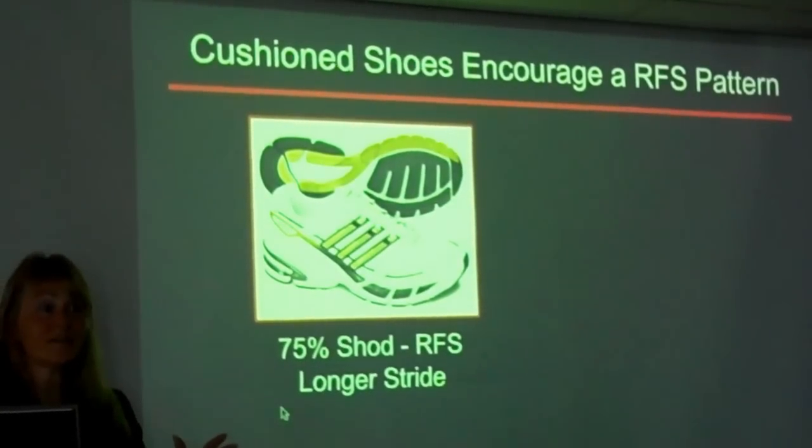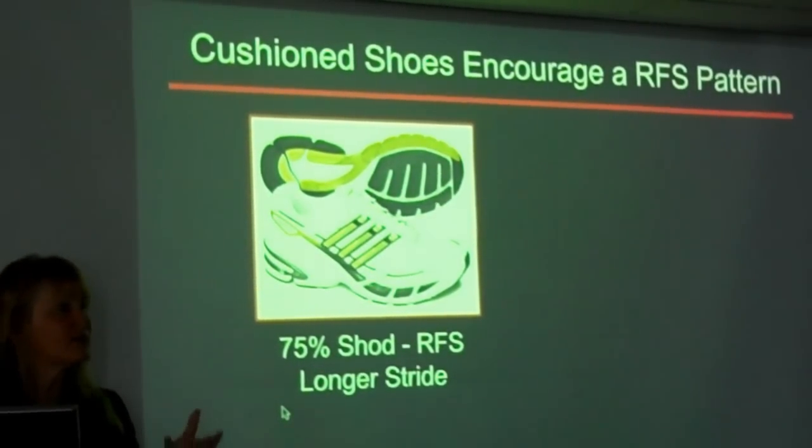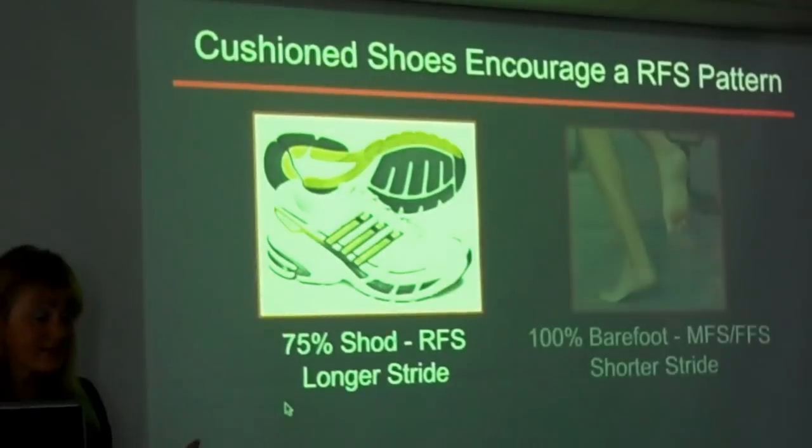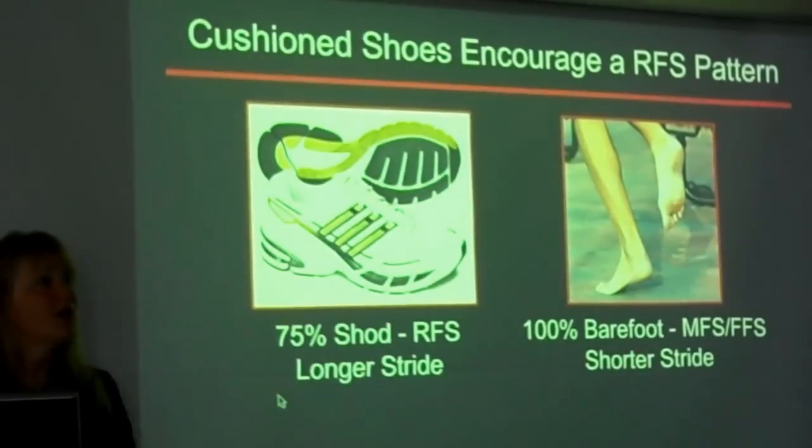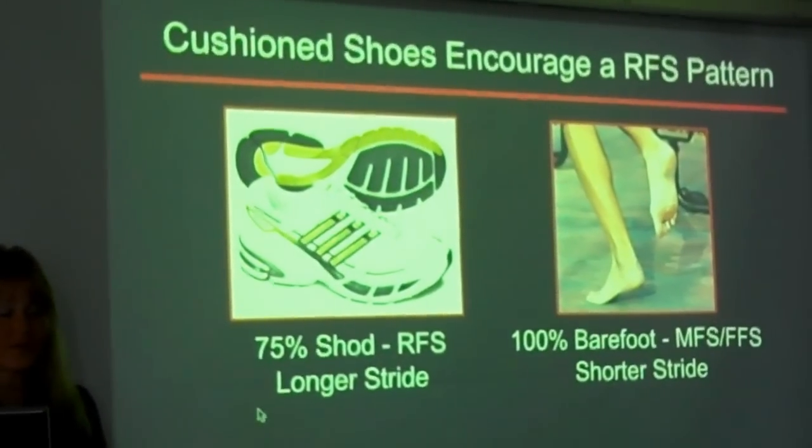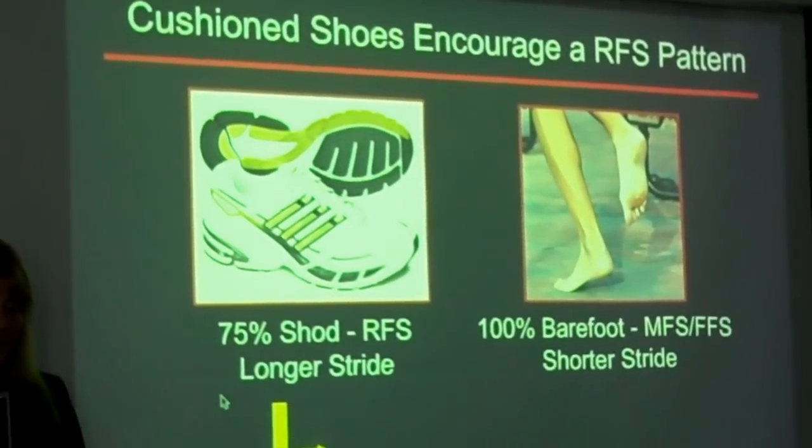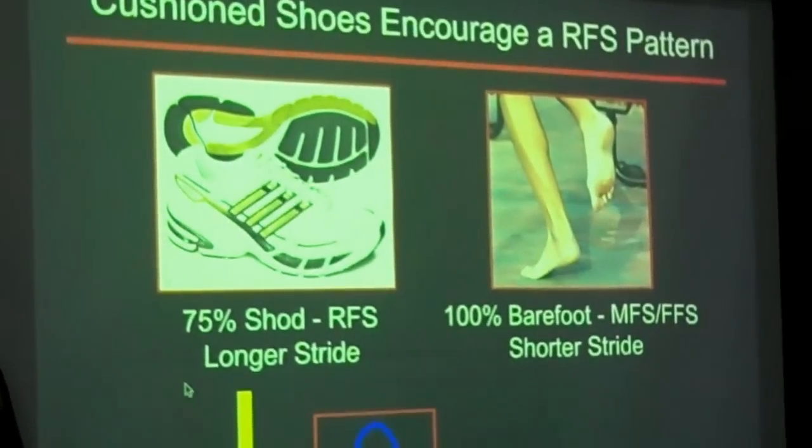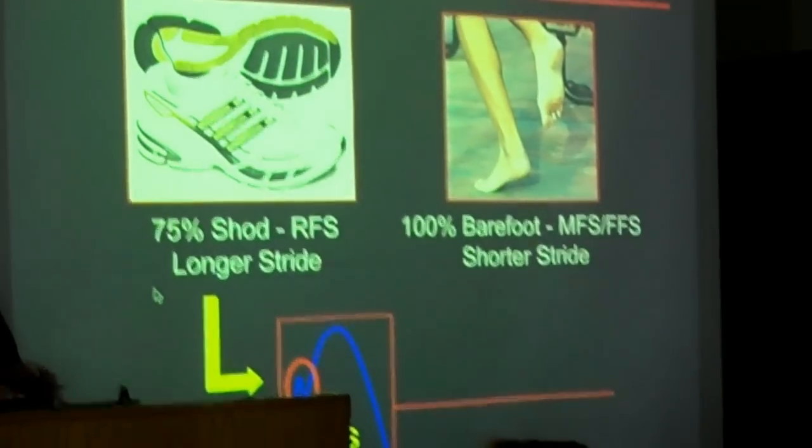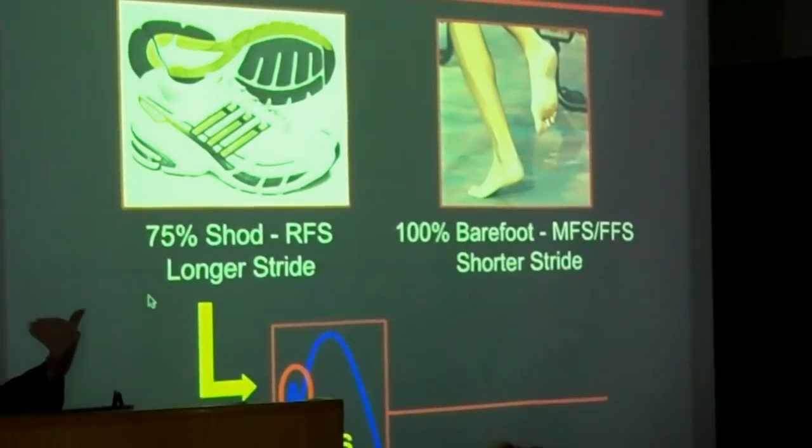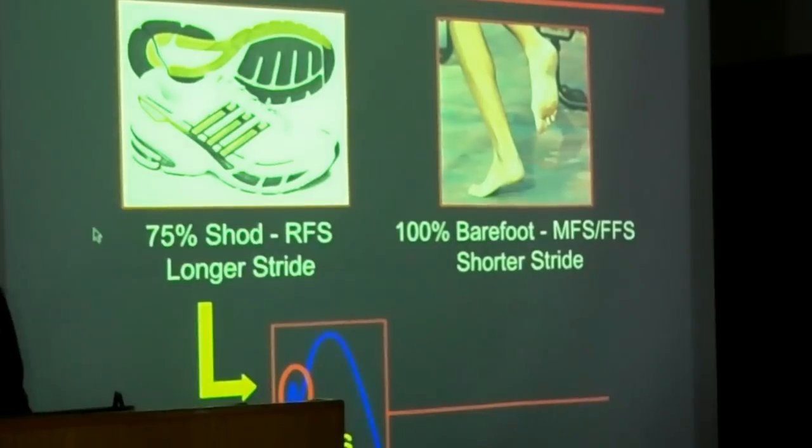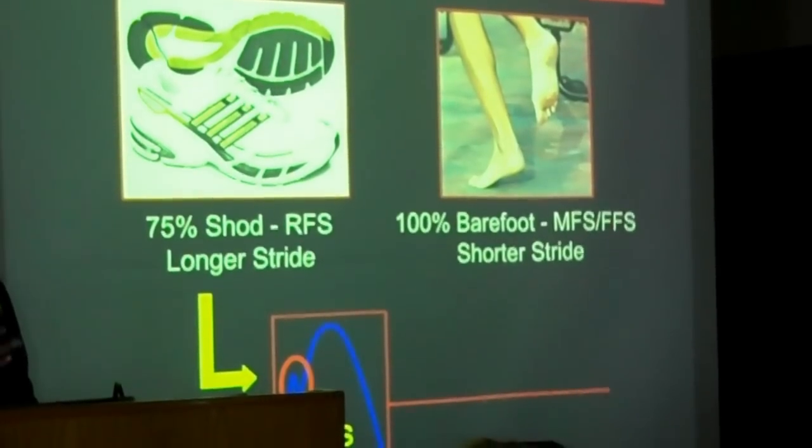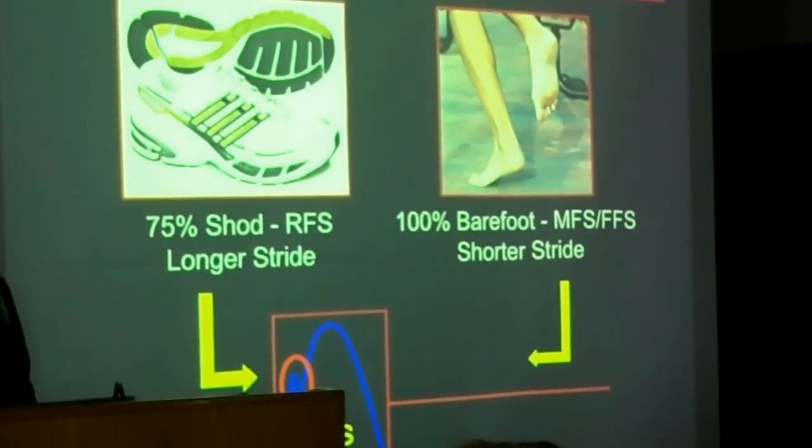However, 75% of runners land on their heel because the cushioning makes it comfortable. Now, you might say, well, that's a good thing, except now we know, and 100% of barefoot runners, once they get running, will not land on their heel. They'll be midfoot or forefoot strikers, and they'll take a shorter stride. Now, the longer stride, let me just say, does afford you a greater speed for a given cadence. But you pay for it, folks. I'm here to tell you, you're getting this impact peak. And this impact peak, as I've said, is related to a number of injuries.